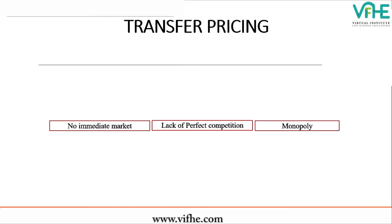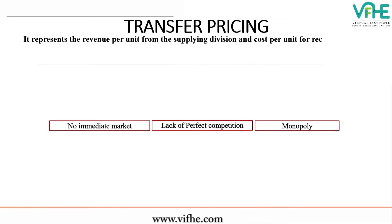Starting from transfer pricing. Transfer pricing has been a big challenge for students in recent attempts and they do face a lot of problems in transfer pricing. So let's understand why the problem arises. Transfer pricing is basically a revenue per unit for the supplying division and cost per unit for the receiving division. Transfer price is essentially the price using which two divisions trade with each other.